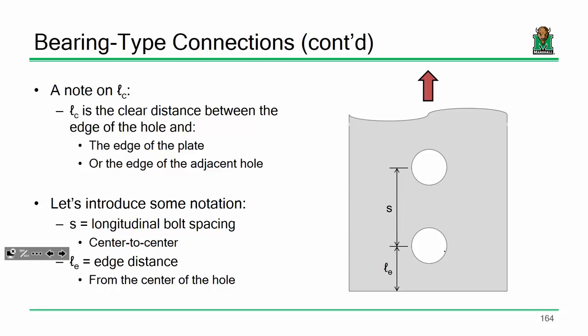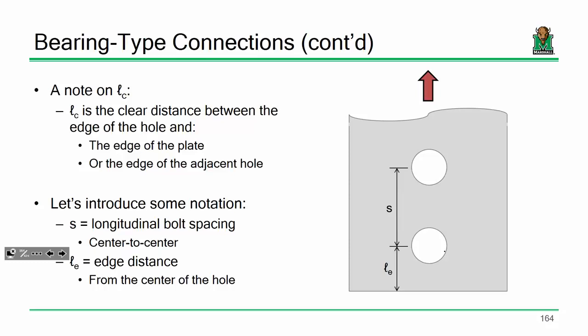To simplify the bolt bearing equation, notice both expressions share thickness and ultimate tensile stress, and there's a common factor of 1.2. Factoring that out, you can calculate the bearing capacity of each individual bolt as 1.2 × t × Fu × min(LC, 2d). This makes the math a lot easier. If you had to calculate each one separately, it becomes really laborious.